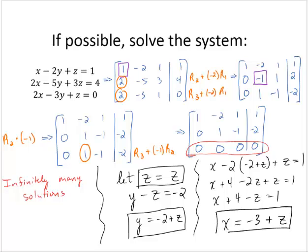So there are infinitely many solutions, but they all take the form negative 3 plus z, negative 2 plus z, z, where z is any real number.